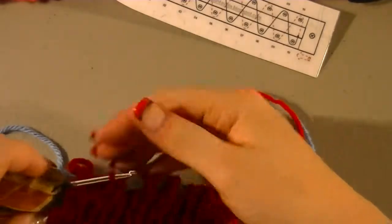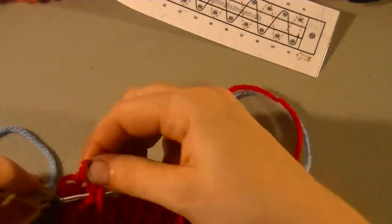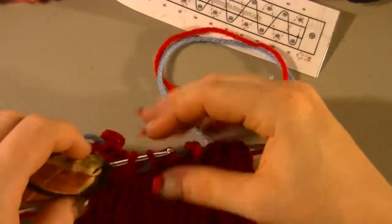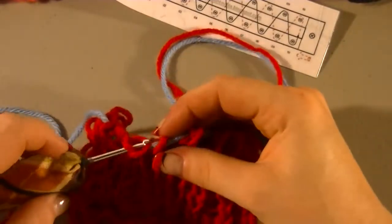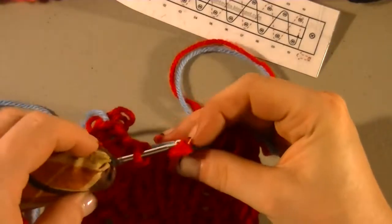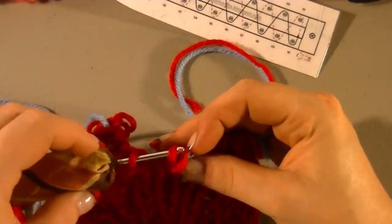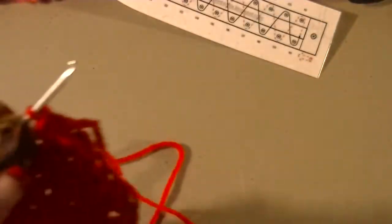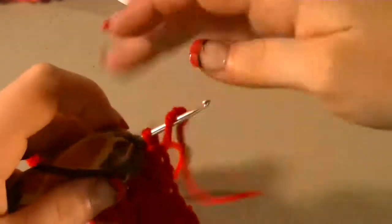And you want to start on the end opposite of the cast on string. You're almost down there. Once you are at your last loop, you can take that blue strand or whatever color you use and pull it out.